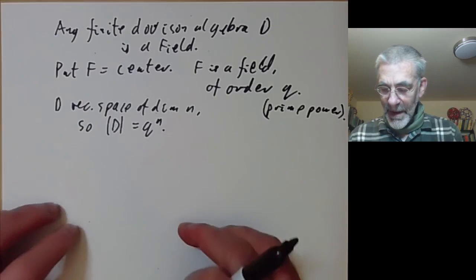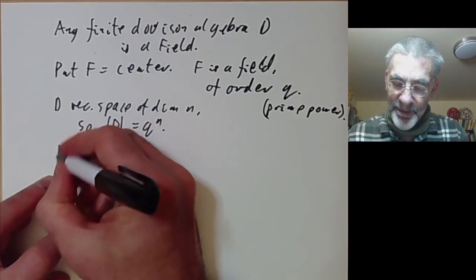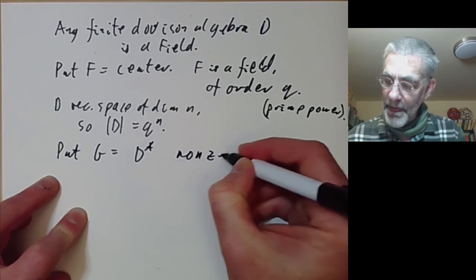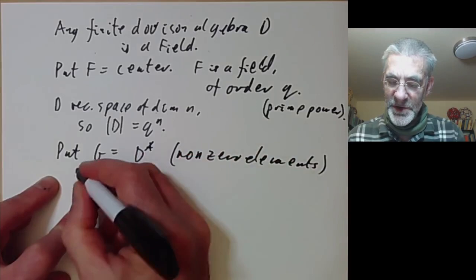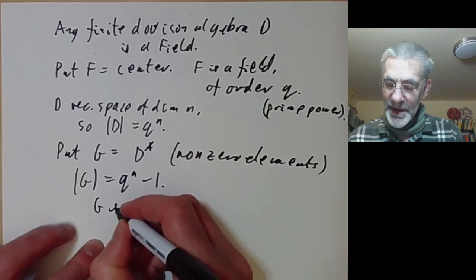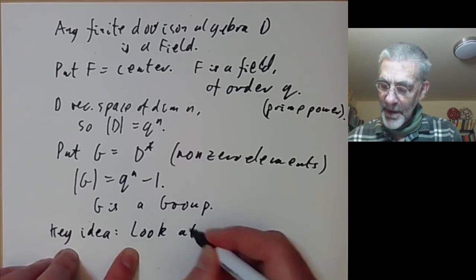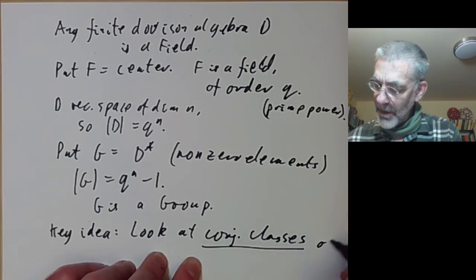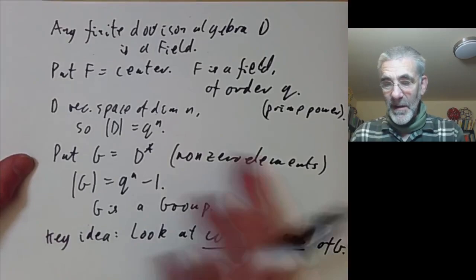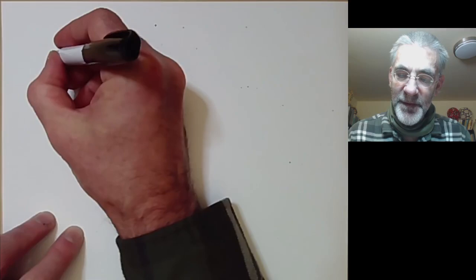And now what we do is let's put g to be the non-zero elements of D. So the order of g is just q to the n minus 1, and g is a group. And now the main key idea of the proof, or the first key idea, is to look at the conjugacy classes of this group g.